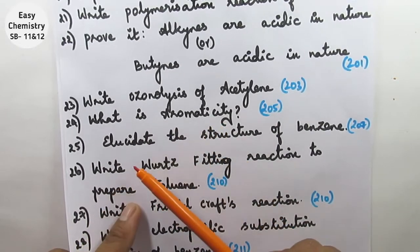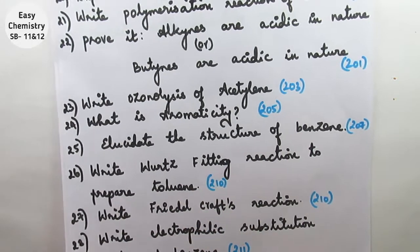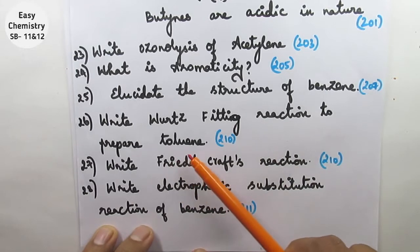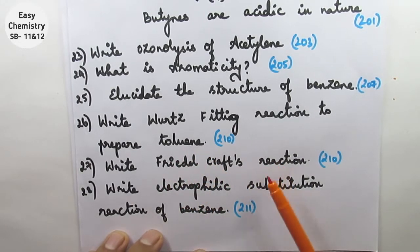Question number 25: Elucidate the structure of benzene. This is very important. Question number 26: Write Wurtz-Fittig reaction to prepare toluene. Question number 27: Friedel-Crafts reaction. This is very important. Know the scientist name.